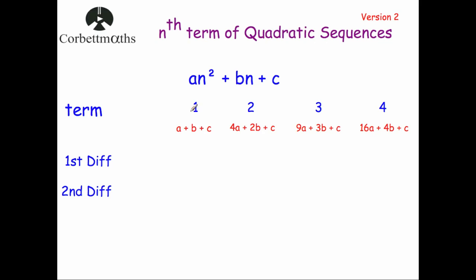If we look at the first term, well n would be equal to 1, so 1 squared is 1 times a is a, b times 1 is b, plus c. So the first term would be a plus b plus c. The second term would be, if you put 2 in, 2 squared is 4, so that would be 4a, 2 times b would be 2b plus c, and so on. So this would be the first, second, third and fourth terms.